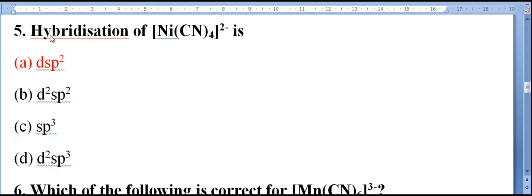Hybridization of Ni(CN)4 2- tetra-cyano-nickelate 2+ ion, is it right? The hybridization is DSP2. This is the correct answer.